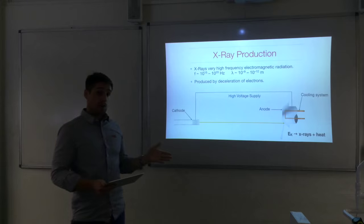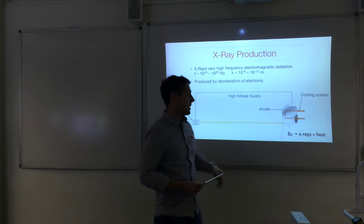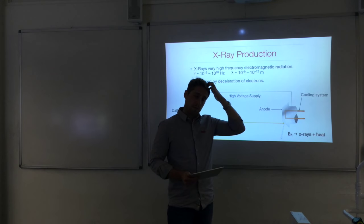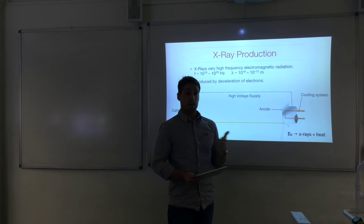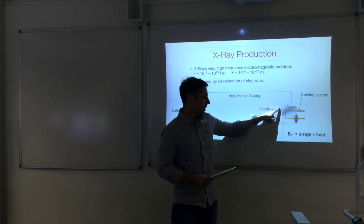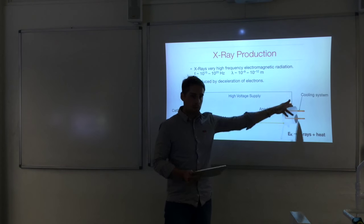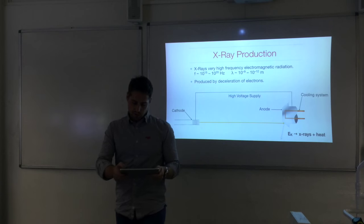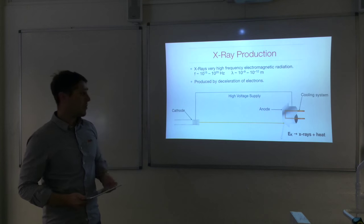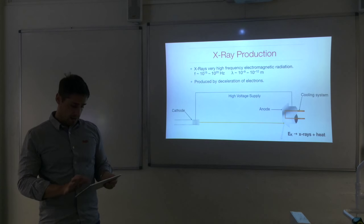Tungsten has a high melting point, which is necessary, and it has other features that make it useful as a target material. But in addition to that high melting point, you will still need to keep it cool. That's how x-rays are produced.